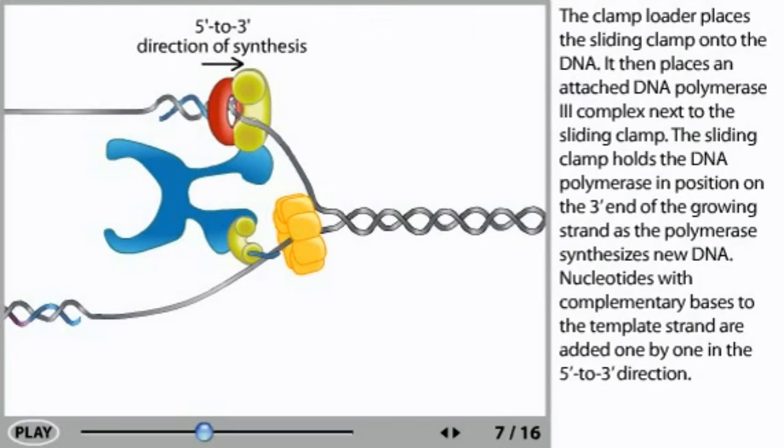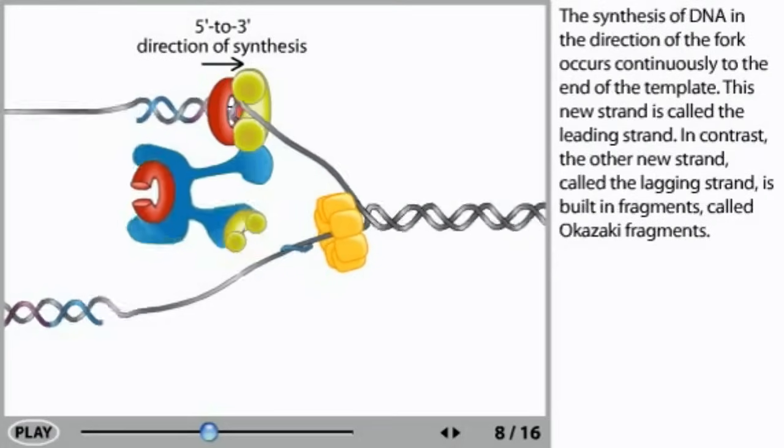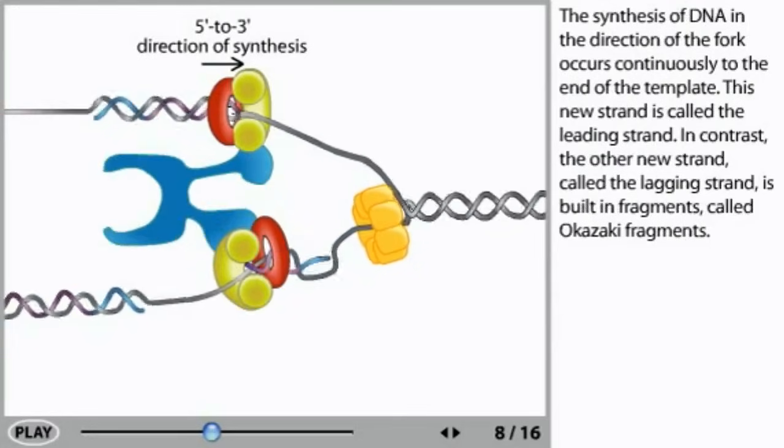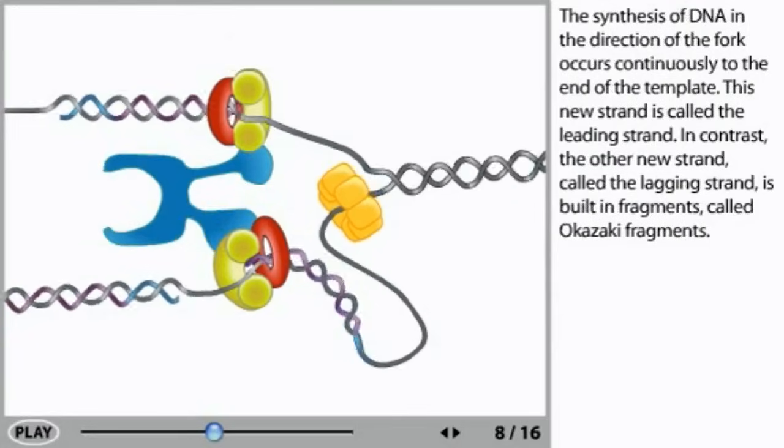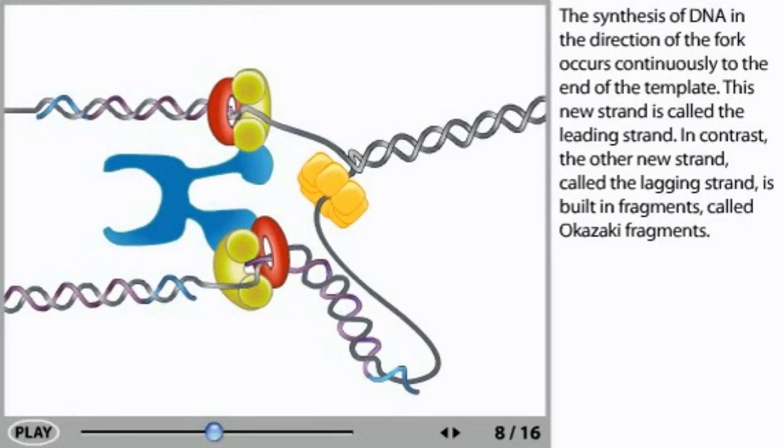Nucleotides with complementary bases to the template strand are added one by one in the 5' to 3' direction. The synthesis of DNA in the direction of the fork occurs continuously to the end of the template. This new strand is called the leading strand.